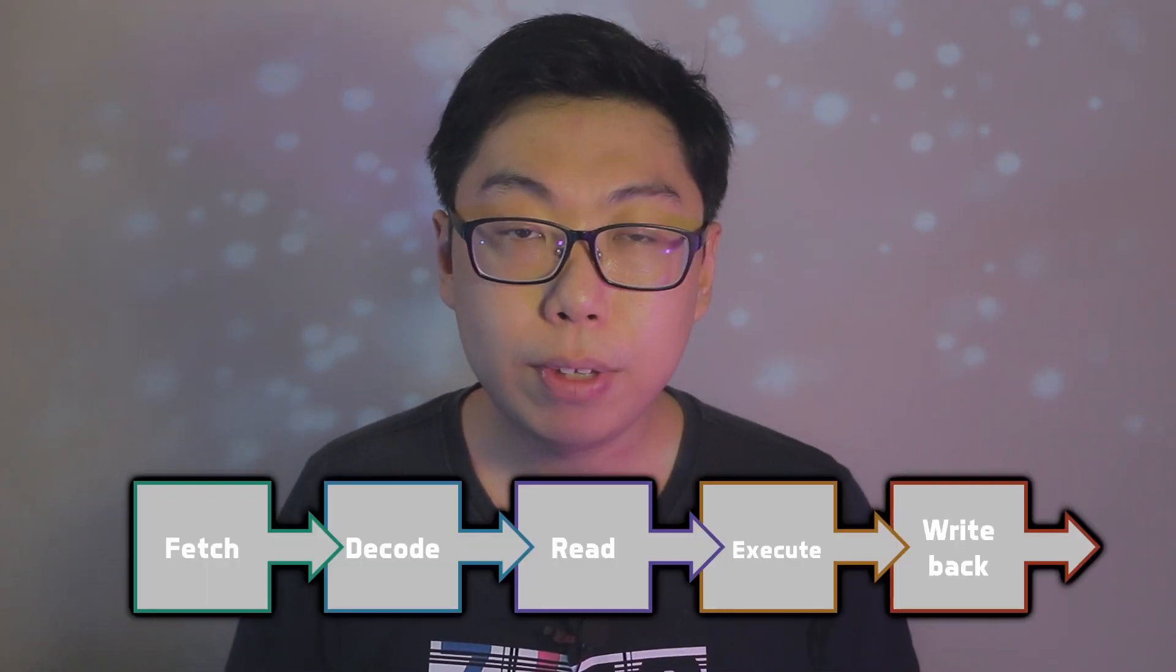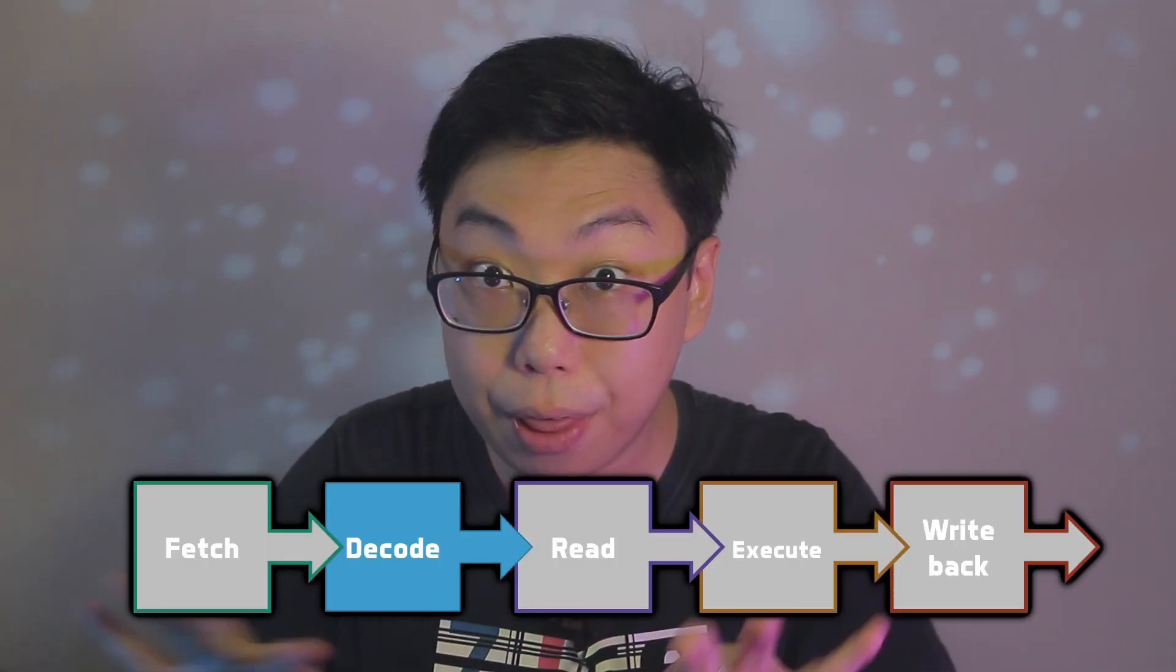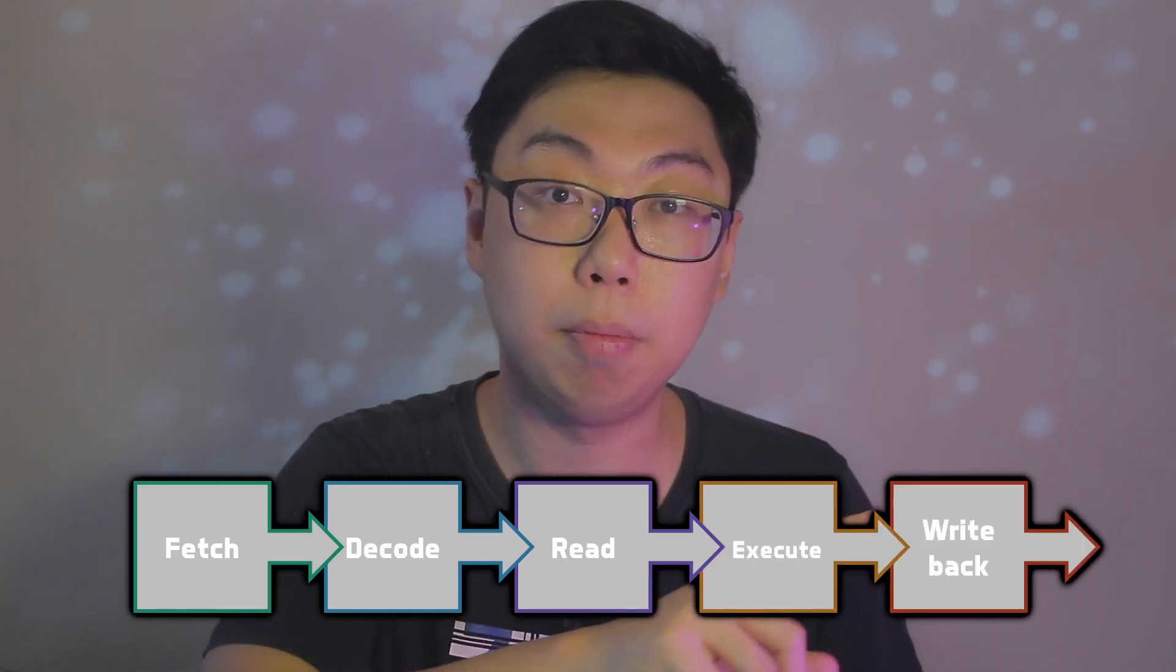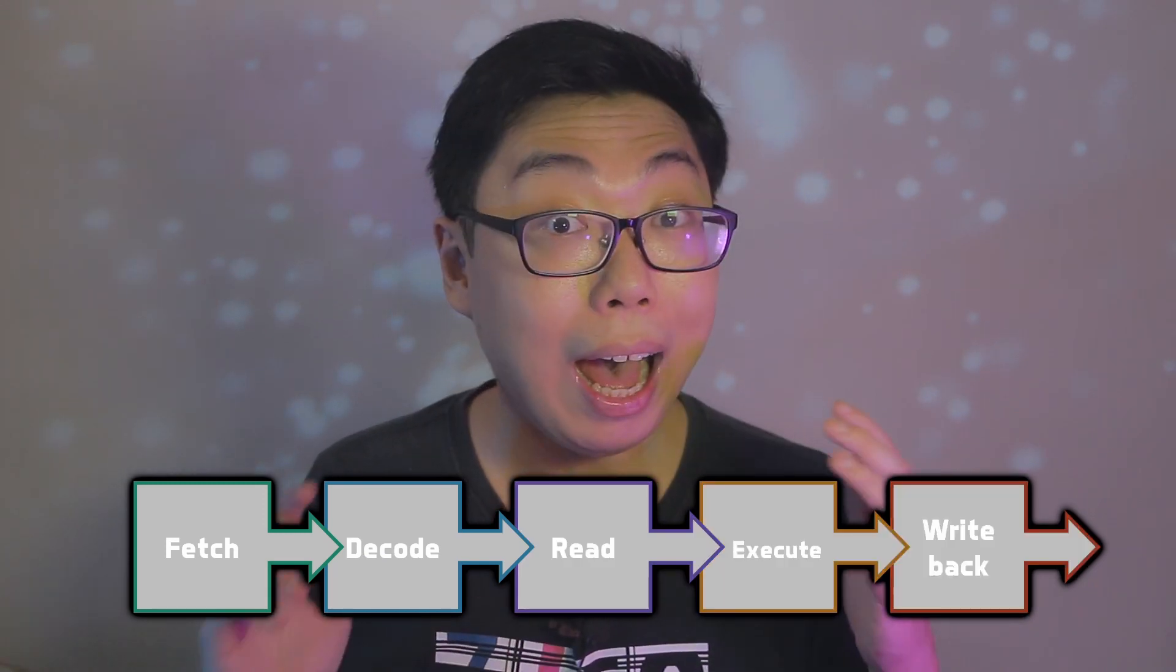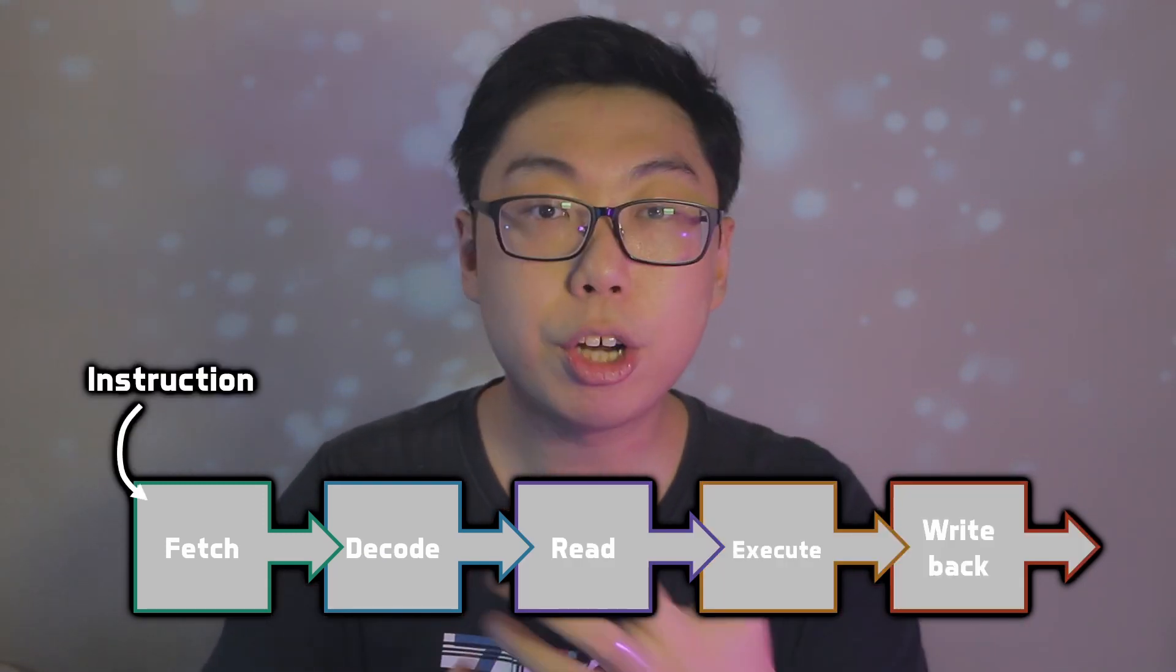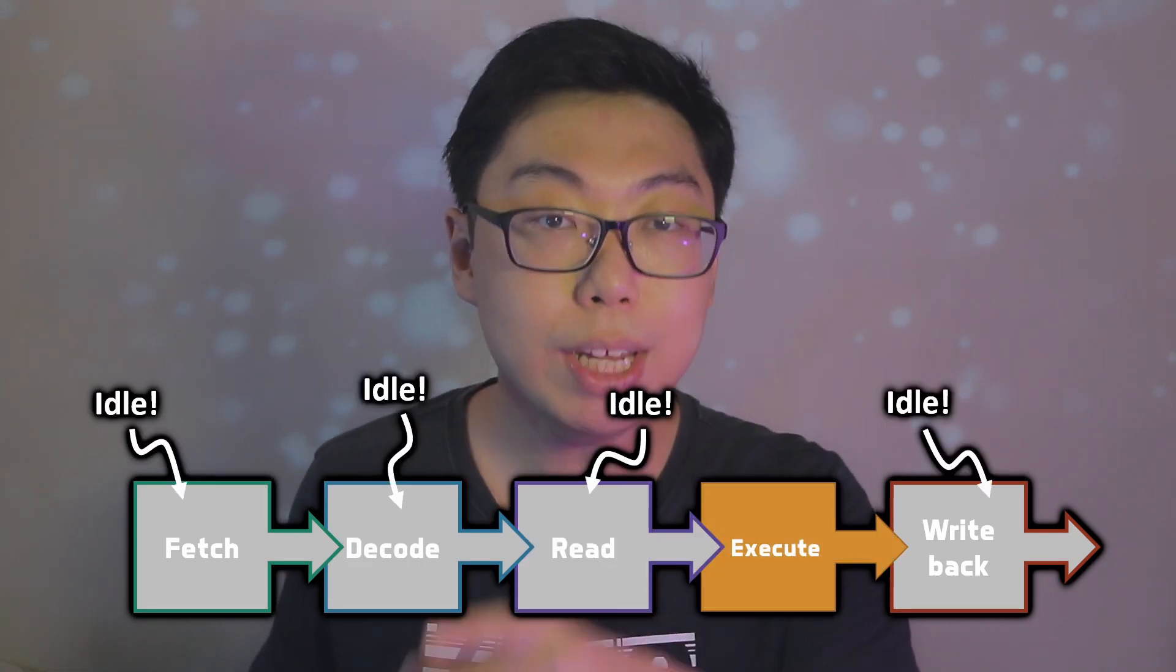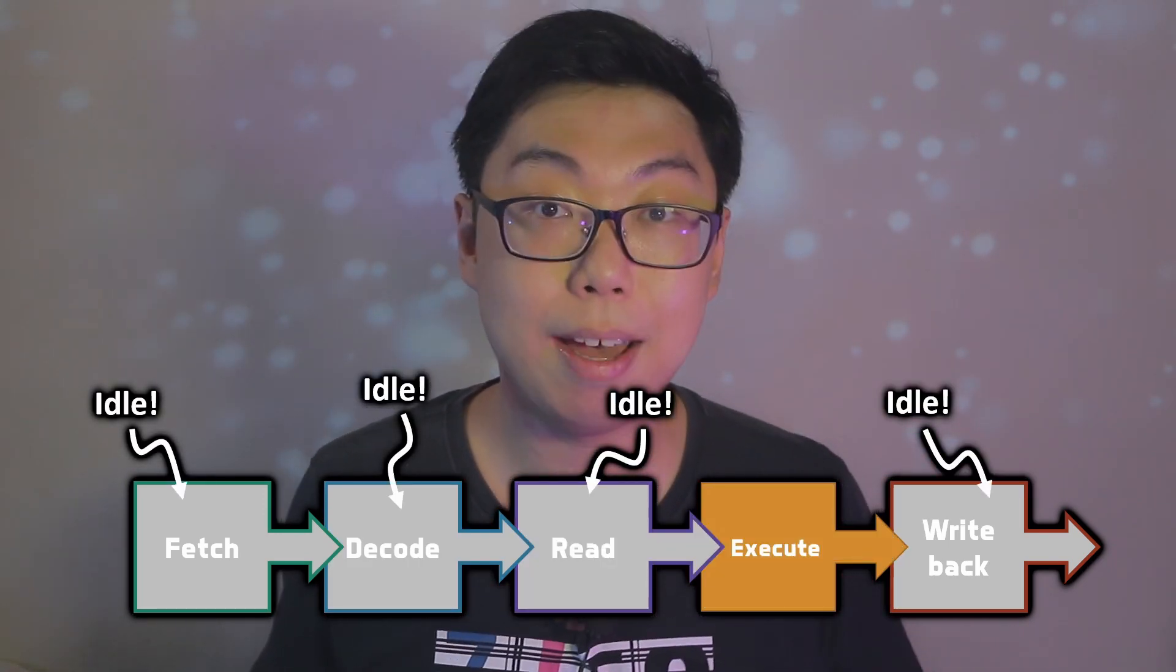However, in doing this, we also start to see an interesting flaw. While yes, an instruction must go through every pipeline stage, let's shift our attention to the other stages, as an instruction is moving through the pipeline. Notice that more often than not, the other pipeline stages are idle. When an instruction is being executed, the fetch, decode, read and write back stages are just sitting there. As you can imagine, it would be horrible for performance if, at any given point in time, only a fifth of your CPU is really doing anything. We're not making good use of resources this way.